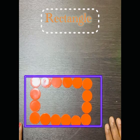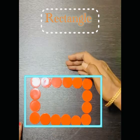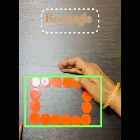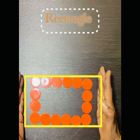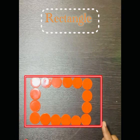So, this is rectangle. Opposite sides are equal. See, this side and this side are equal and this side and this side are equal. And it has 4 corners.